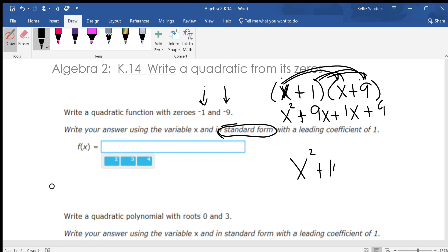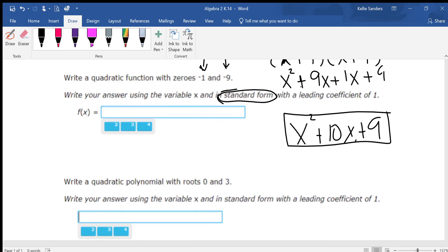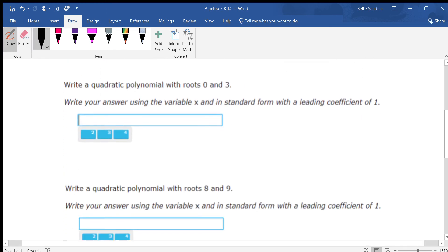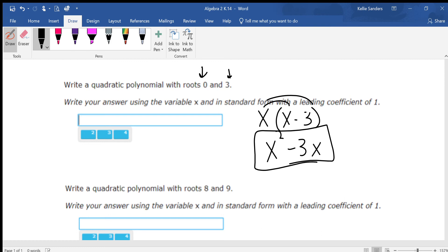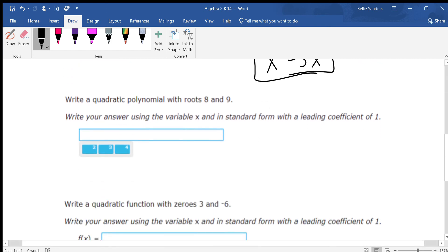If it's just zero, then it was just x. There's a positive three, so now it's a minus three. Distribute: x squared minus three x, x minus eight, x minus nine x minus eight x, that's x squared minus seventeen x plus seventy-two.